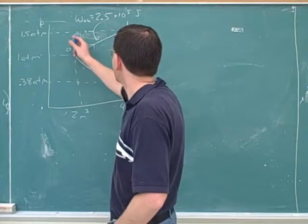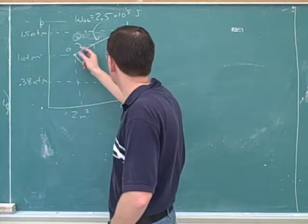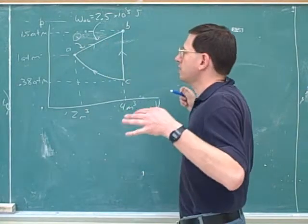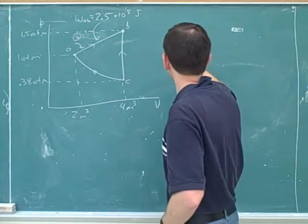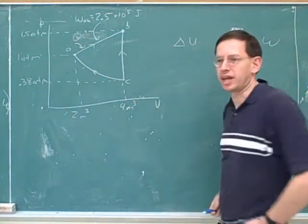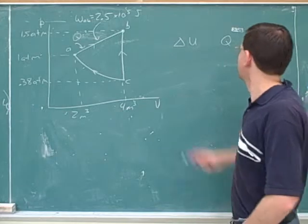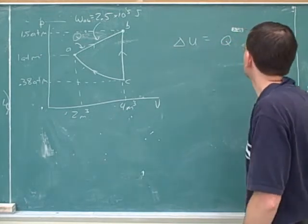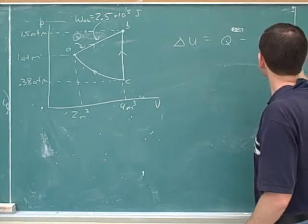So we don't have any special formula that's going to tell us what the heat is along this line. However, there's basically three thermodynamic variables that we've been working with: delta U, Q, and W. What's the relationship between these? Delta U is equal to Q minus W. Very good.